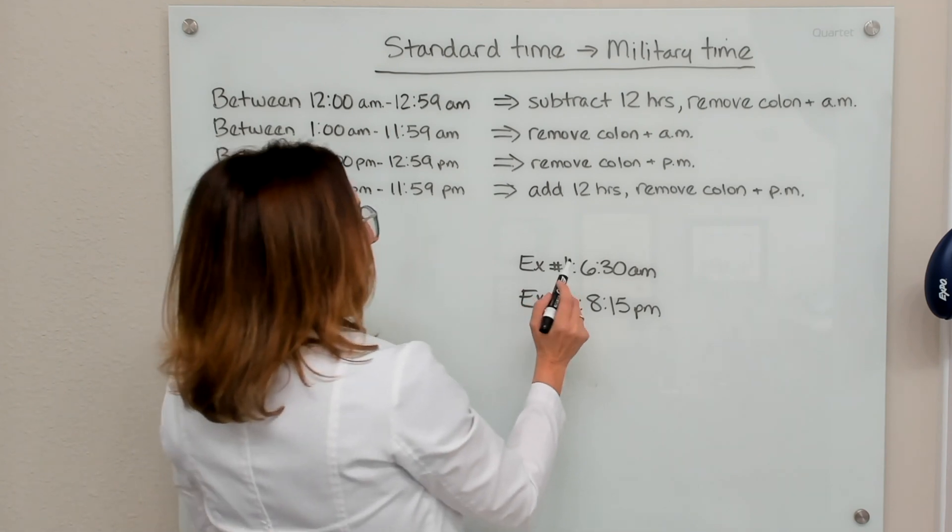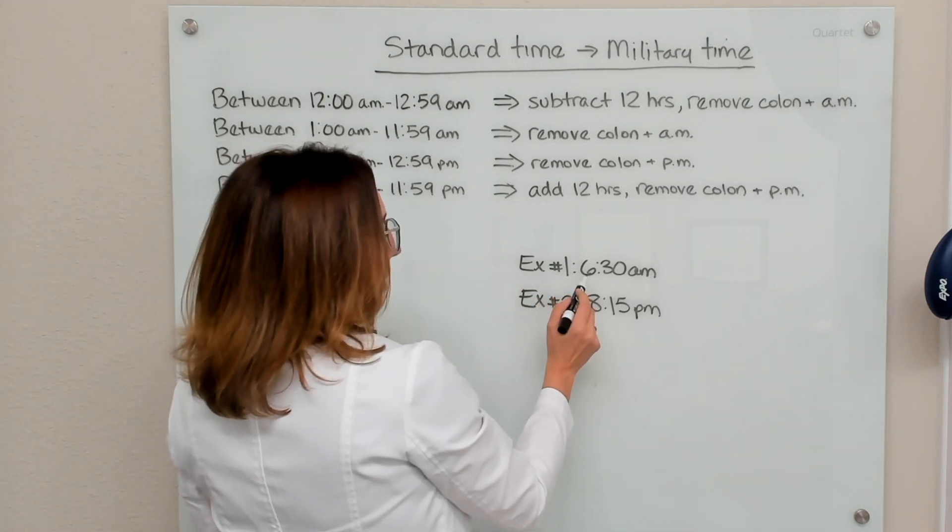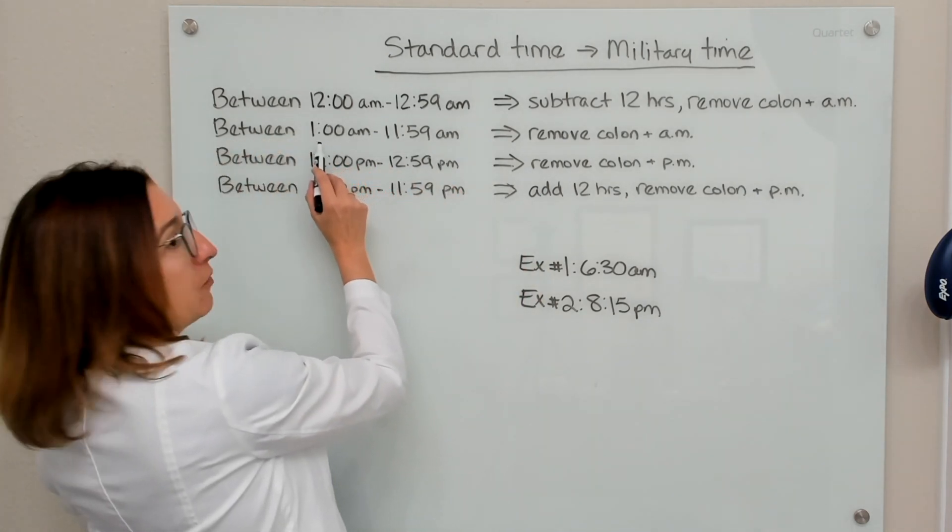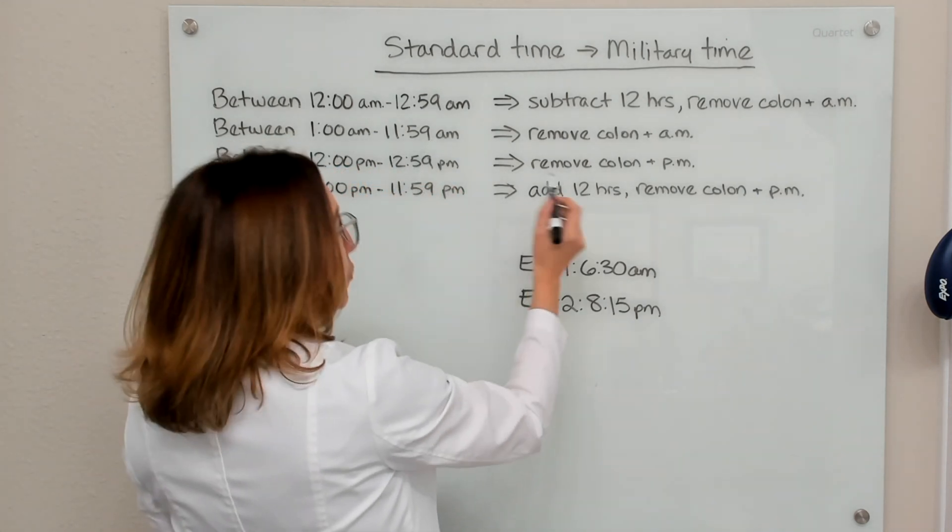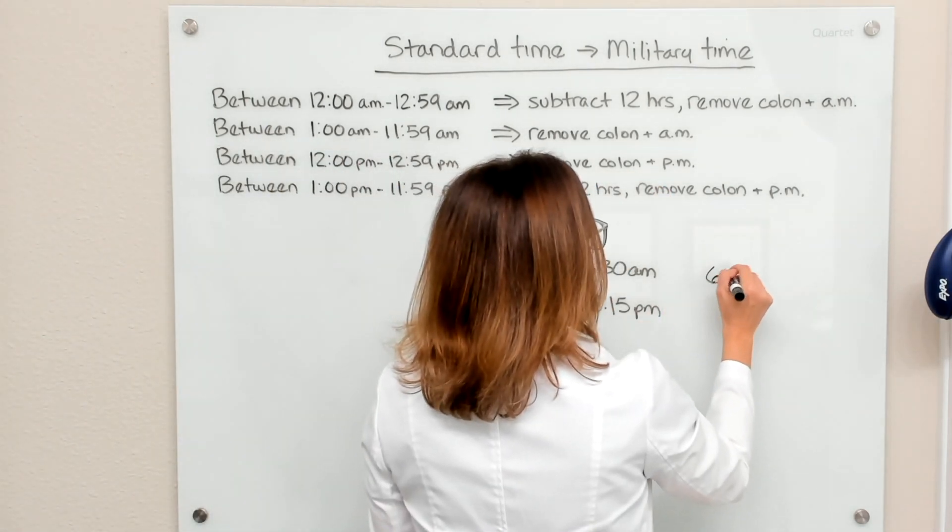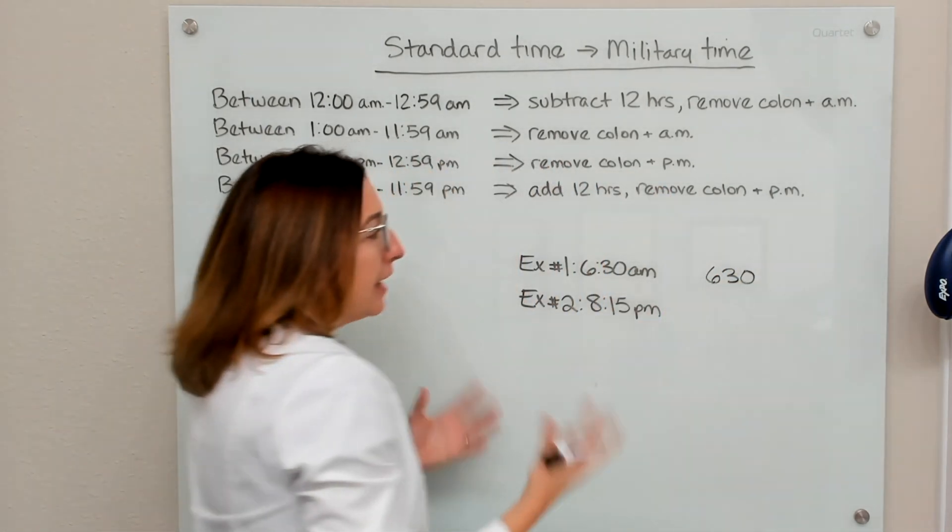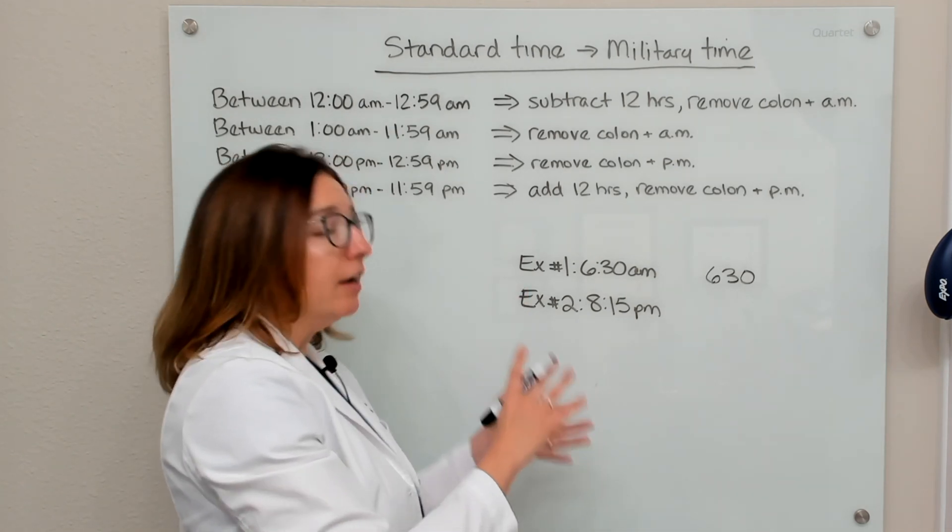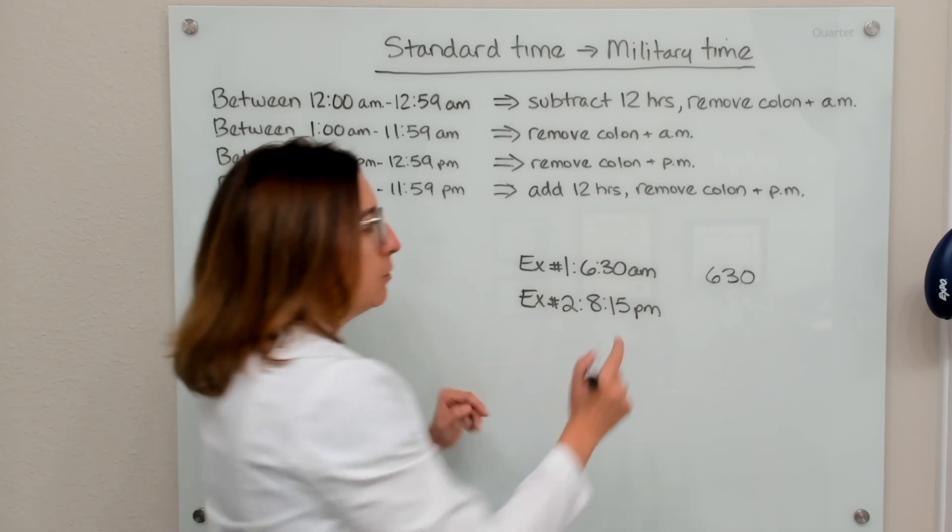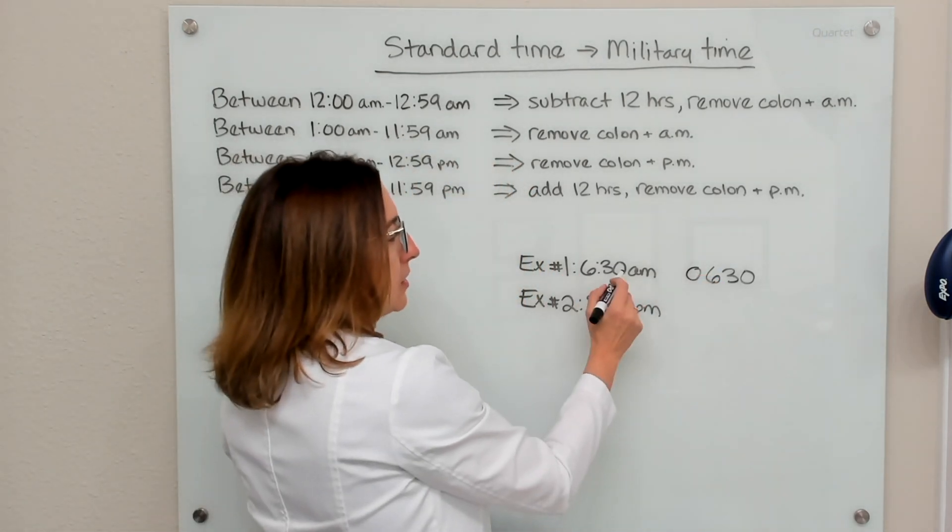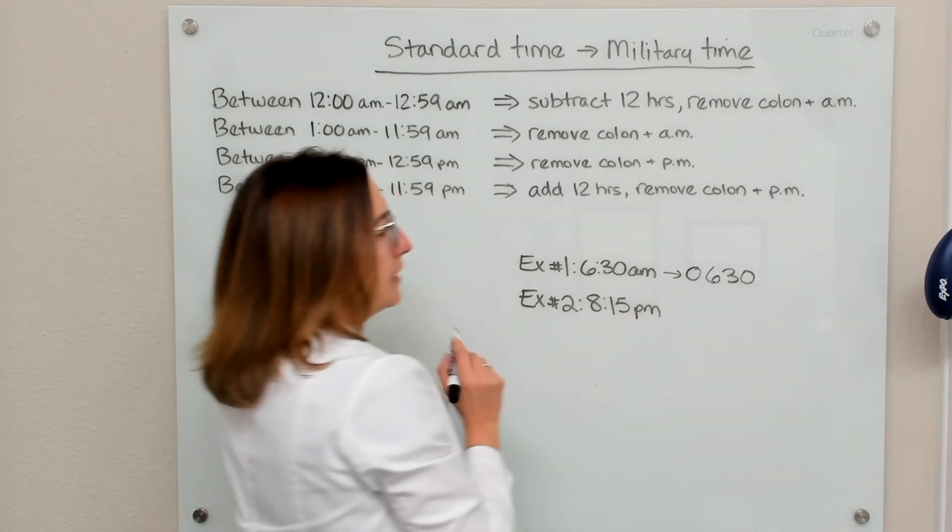So our first example has a standard time of 6:30 a.m. So that really falls within this range right there. So we need to remove the colon and the a.m. So if we do that, we end up with 630. But because we need four digits, two digits for the hour, two digits for the minutes, we need to add a zero on here. So 6:30 a.m. becomes 0630.